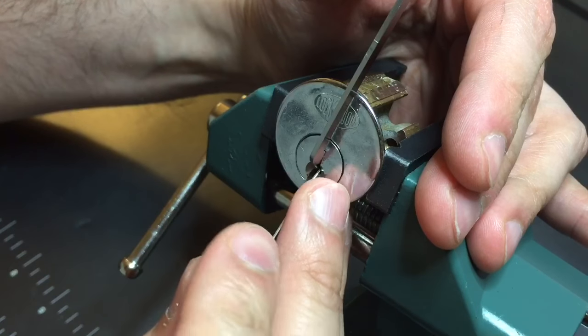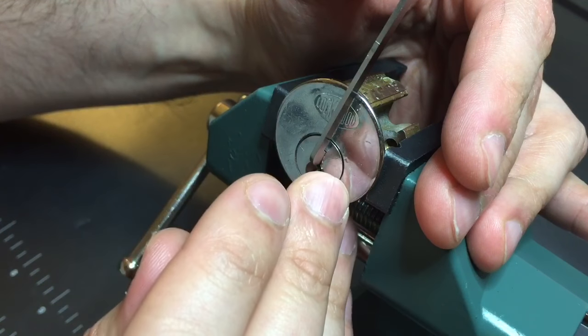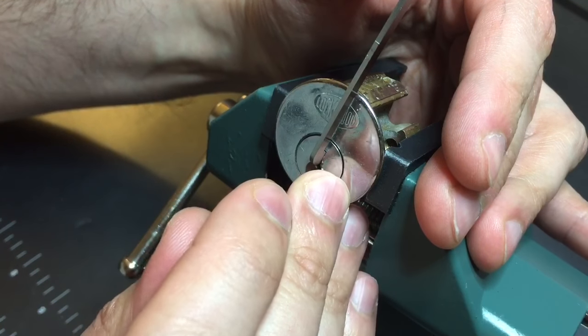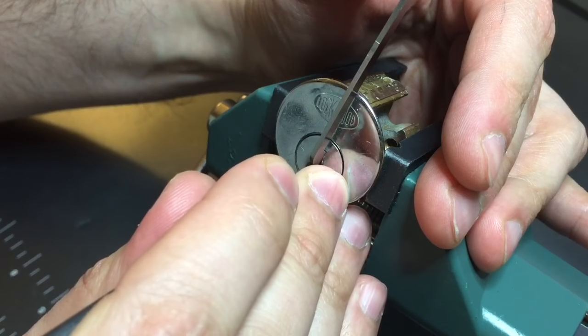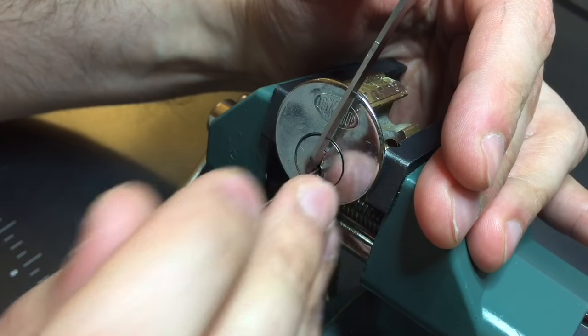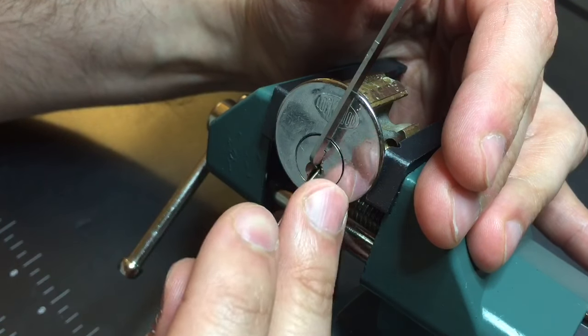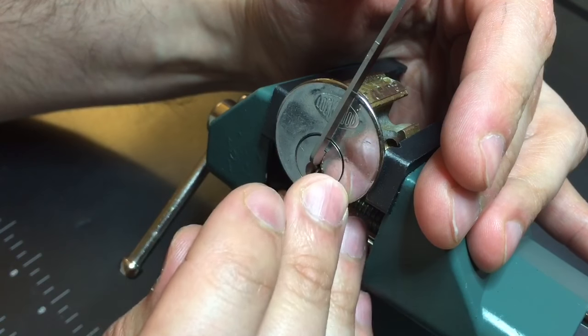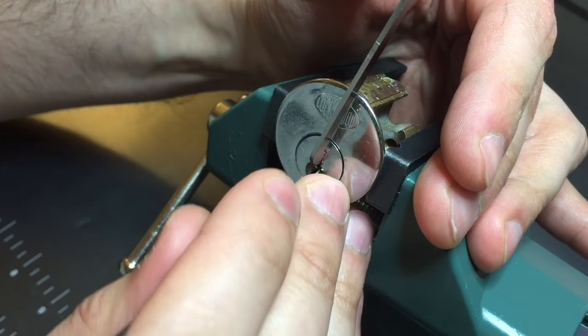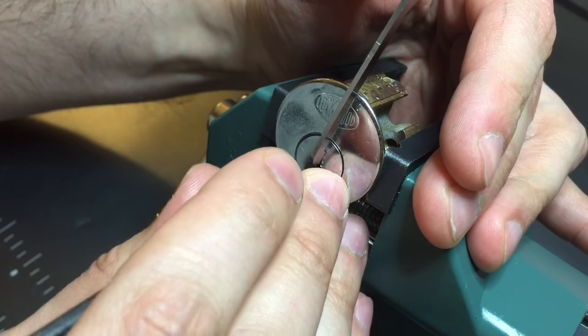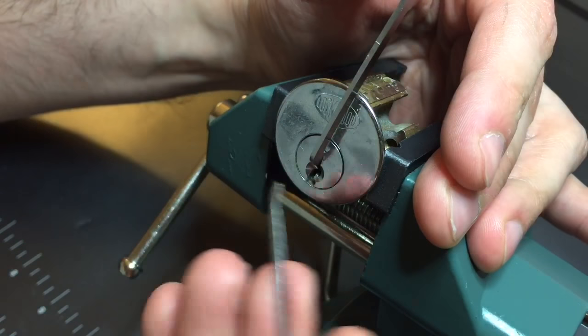Nothing more from four or five. Okay one's binding. Got a click there. Nothing from two. Click out of three. Click out of four. Nothing from five. Nothing from one, nothing from two, nothing from three. Little click out of four. Nothing from five. I'm gonna check for over set pins now.